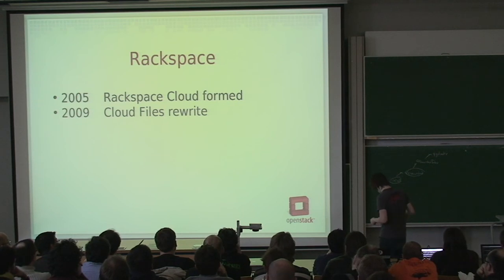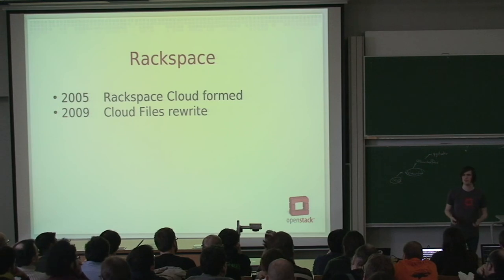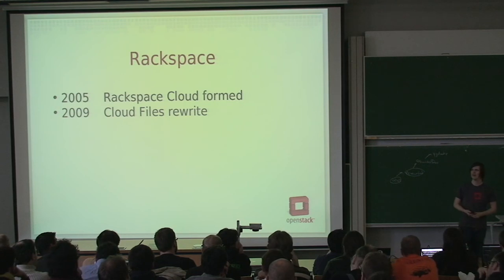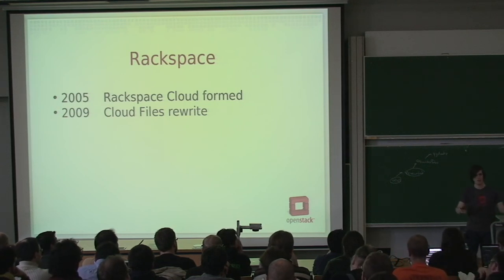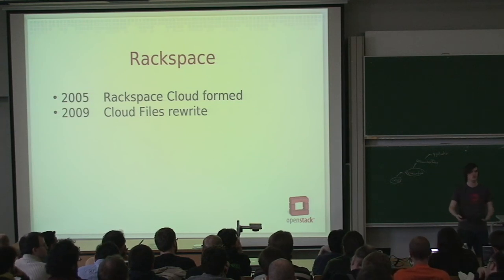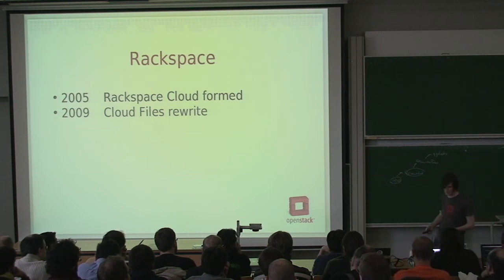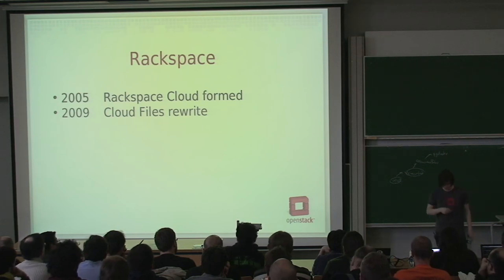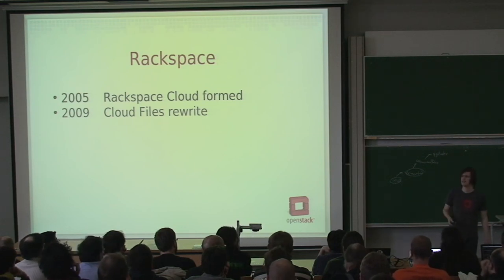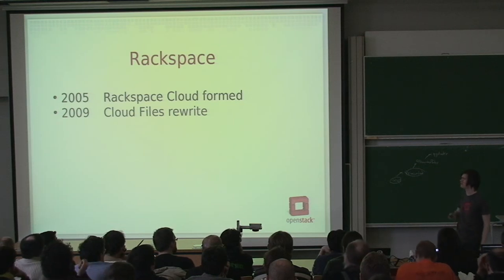In 2009, some years had passed since they started and I don't think anyone anticipated how much cloud computing was going to take off. Even if they had, they might not have foreseen where the bottlenecks would be when growing to petabytes of data. So in 2009, Rackspace decided to rewrite the whole thing — Cloud Files at least. That started in late 2009, finished around March or April 2010, and went into production in May.